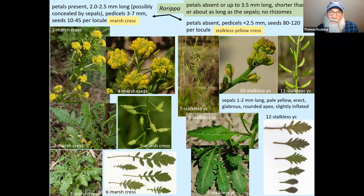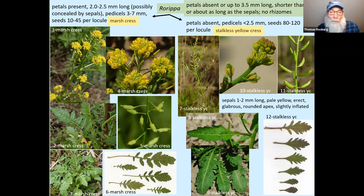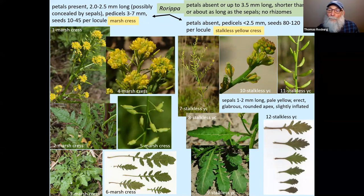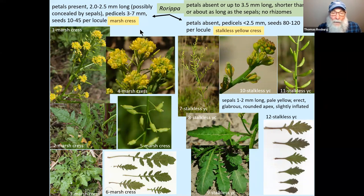Finally, Rorippa. Two native species are fairly common. These two have very small petals or petals absent — separating them from other Rorippas that have petals greater than 3.5 mm long. Rorippa palustris — marsh cress — does have petals, though small and sometimes concealed by the sepals; pedicel length is more conspicuous as a character. Rorippa sessiliflora — stalkless yellow-cress — essentially lacks petals; its sepals become slightly yellowish, taking on a petal-like appearance. Count carefully: if there are just four yellowish structures, those are sepals, not petals. Seed number per locule also differs substantially between these two.